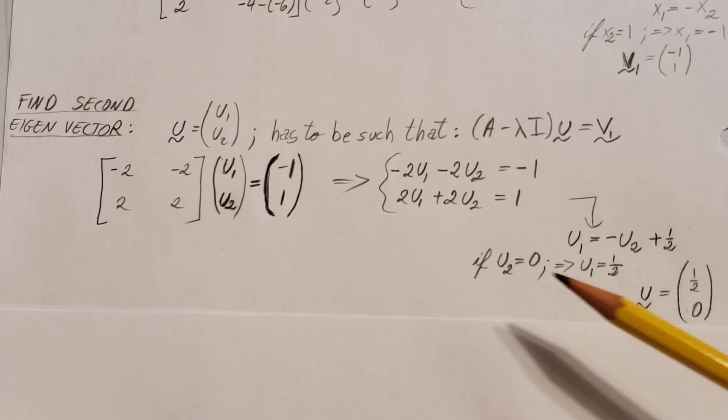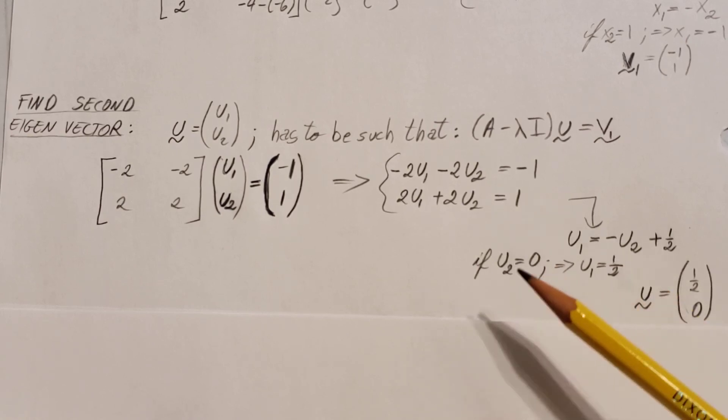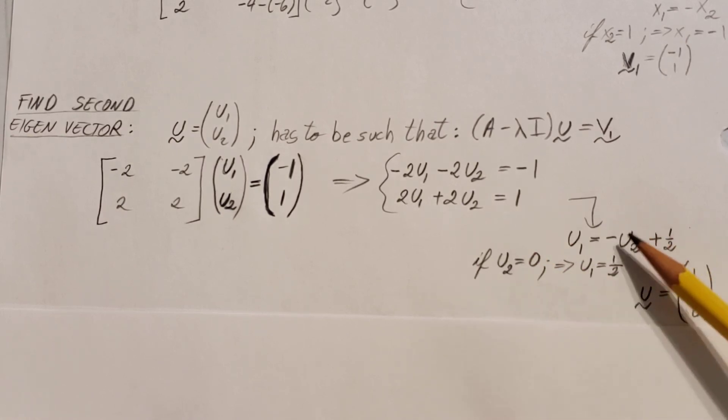From here, if we decide to pick some nice numbers, u2, I'm going to pick it as 0. That's going to lead me to have u1 as 1 half. So there you go, my u vector will be 1 half and 0.